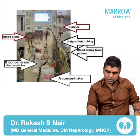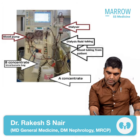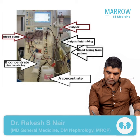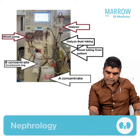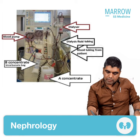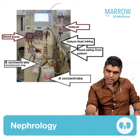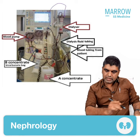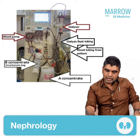This is the arterial tubing, this is the blood pump, this is the saline port, and this is the heparin port. From there, the blood is actually coming to the dialyser in this direction.